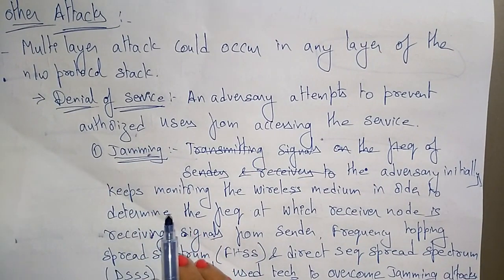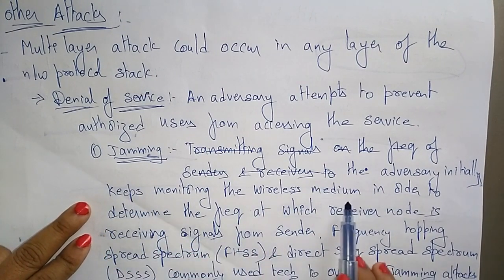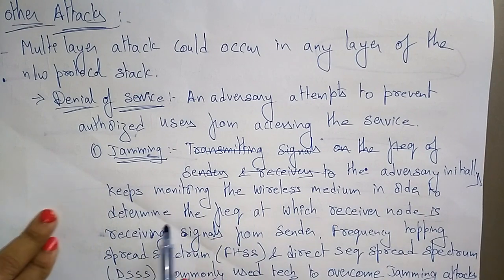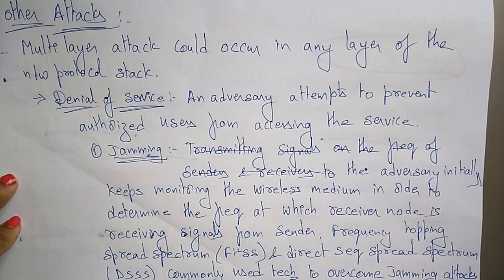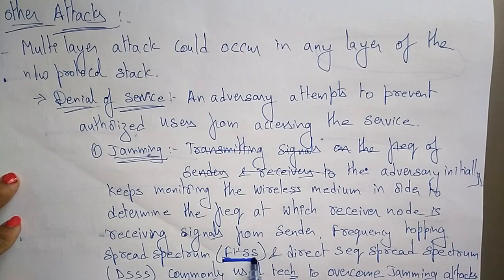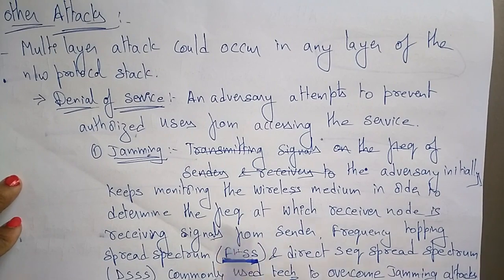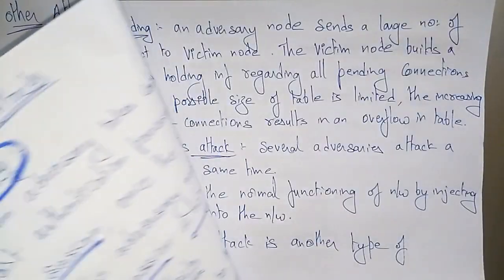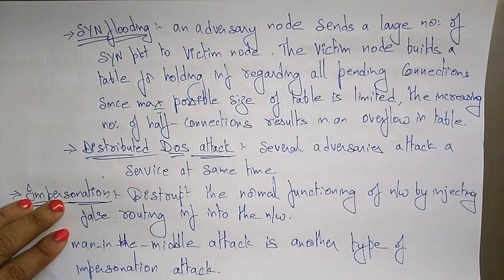One cause of denial of service is jamming. The adversary monitors the wireless medium to determine the frequency at which the receiver node is receiving signals from the sender. Frequency Hopping Spread Spectrum (FH-SS) and Direct Sequence Spread Spectrum (DS-SS) are commonly used technologies to overcome jamming attacks.